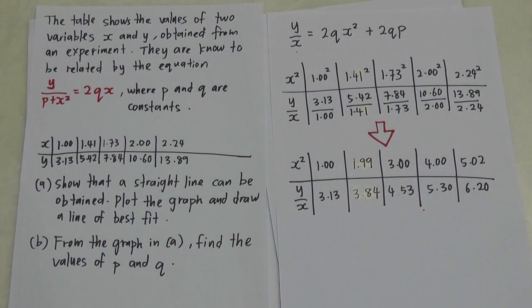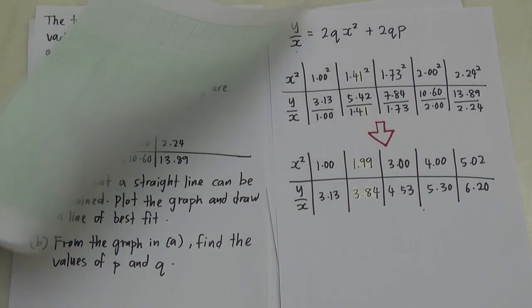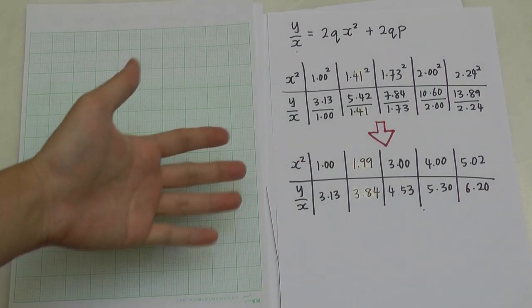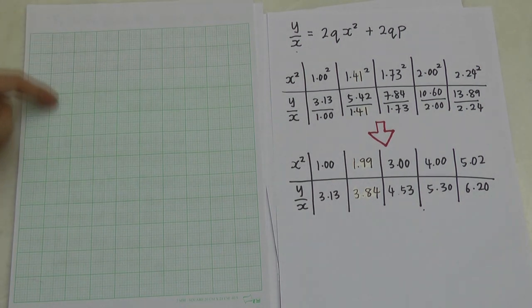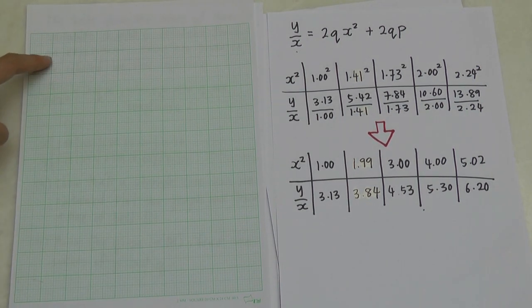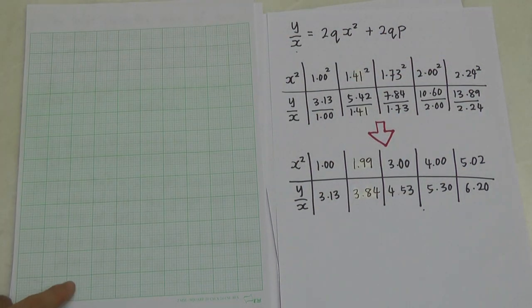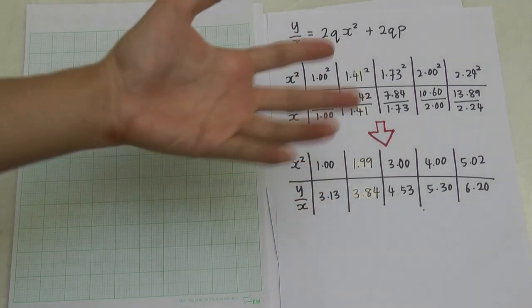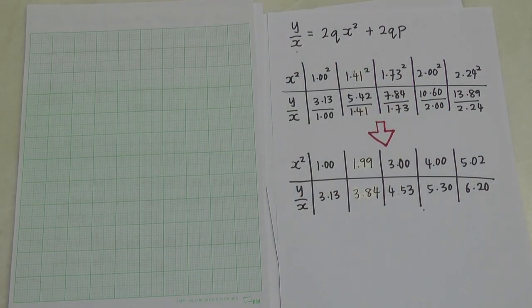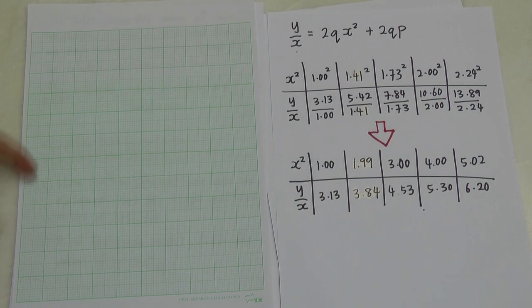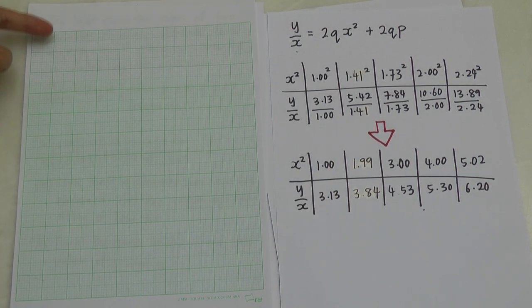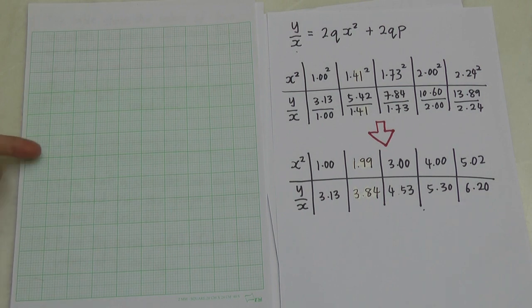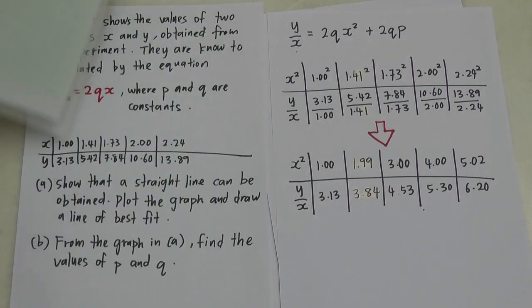I want to sketch the graph. For the horizontal axis, the maximum value is 5 and the minimum is zero since there are no negatives, so I use 2 cm for one unit. For the vertical axis, Y over X, the minimum is zero and the maximum is 6, so I also use 2 cm for one unit — going up to 7 since my highest value is 6.2. After you have the scale ready, you just plot the points and get something like this.